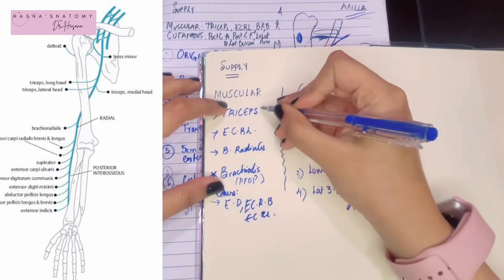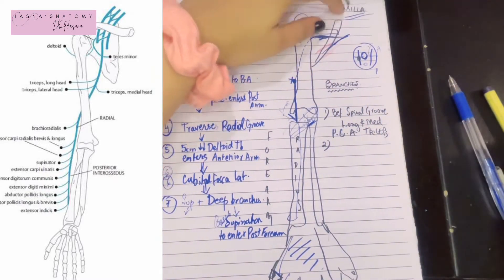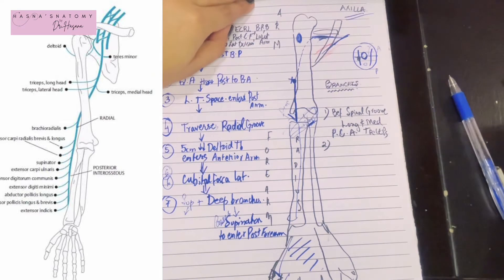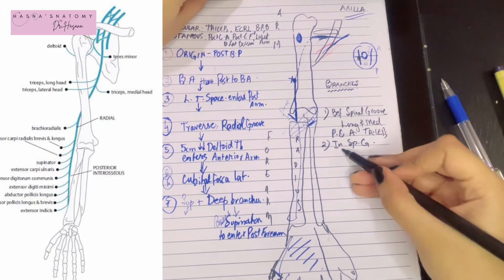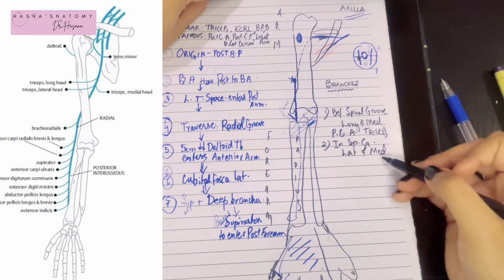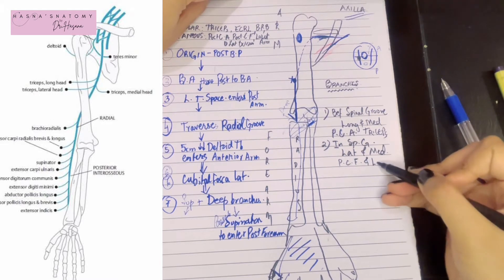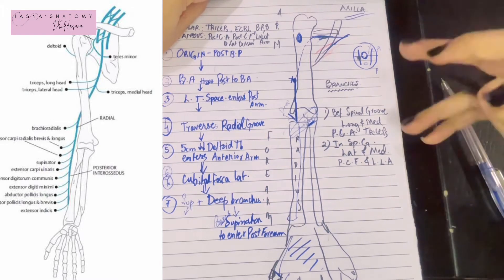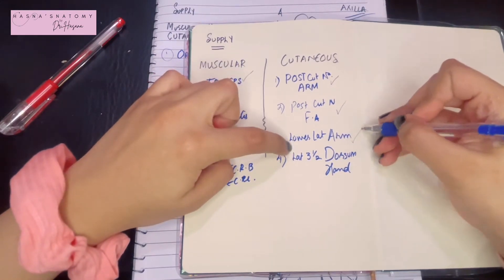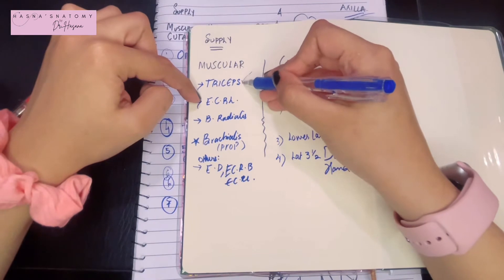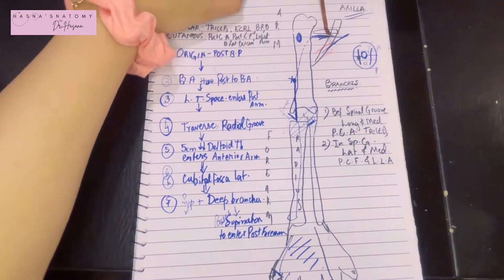So before the spiral groove, three branches have been given off: triceps supply (long and medial heads) and the posterior cutaneous nerve of the arm. Now, while the radial nerve is in the spiral groove, it again gives supply to the triceps — the lateral and medial heads this time. In addition, it gives the posterior cutaneous nerve of the forearm and the lower lateral cutaneous nerve of the arm. So as you can see, the complete supply to the triceps is accomplished inside the spiral groove.